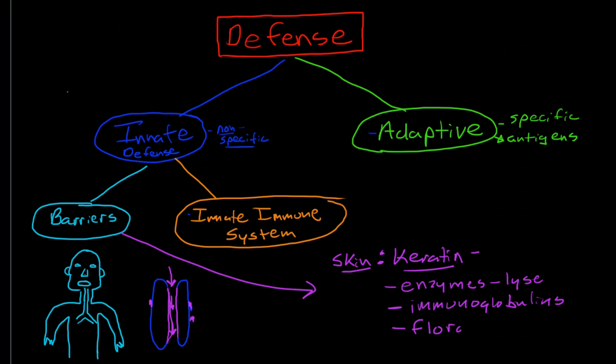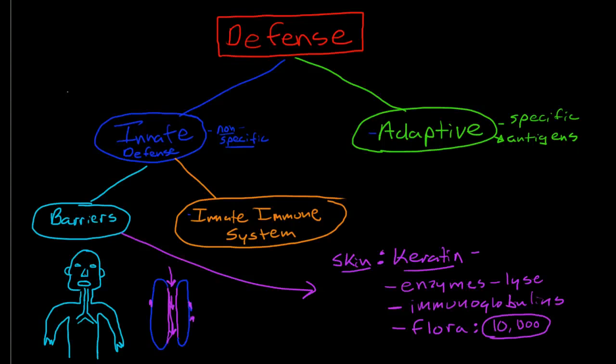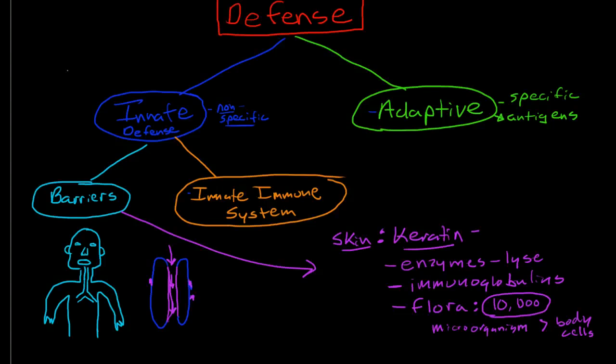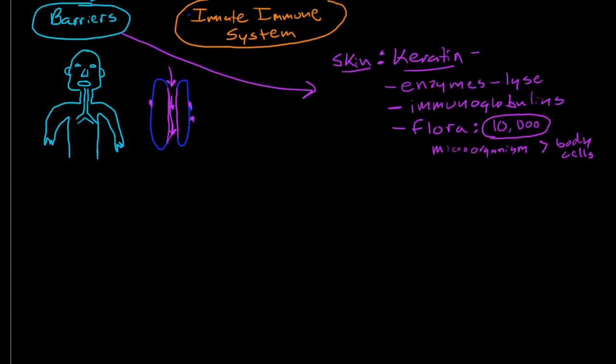Interestingly, another element of this barrier defense on our skin is normal flora. We all have about 10,000 different species. If you count up all the numbers of our own body cells and the cells of microorganisms that live on us and within us, there are more microorganisms in and on our body than our own body cells. These are all normal flora that live on our skin, and they're an important part of our barrier defense system.